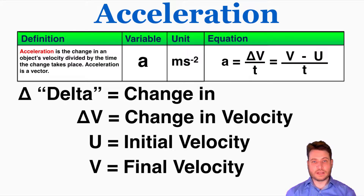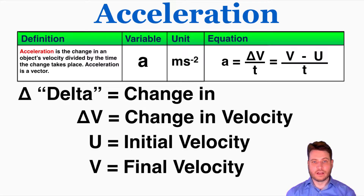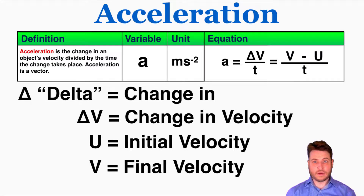So we can now start talking about acceleration. Acceleration is the change in an object's velocity divided by the time the change takes place. Acceleration is a vector. The variable for acceleration is lowercase a, and the unit is meters per second squared, or meters seconds to the negative 2. I'll explain why that is a little later in the video.